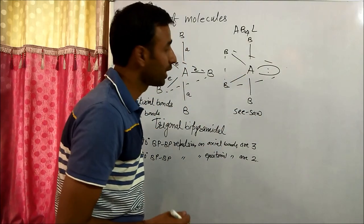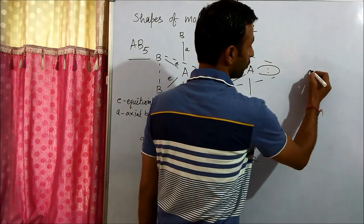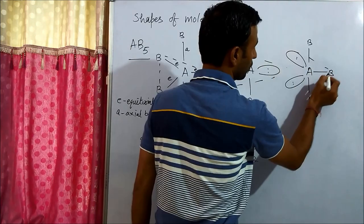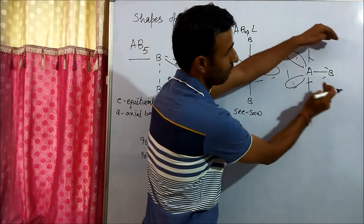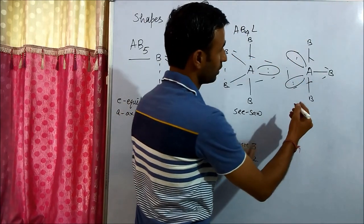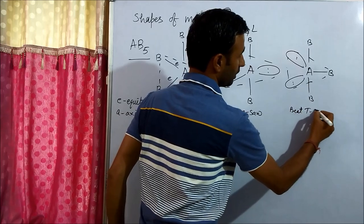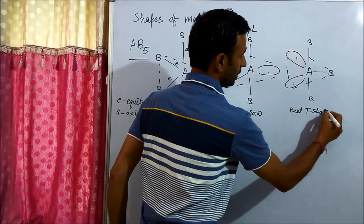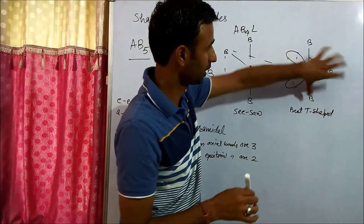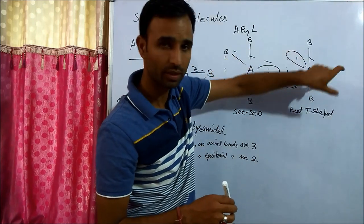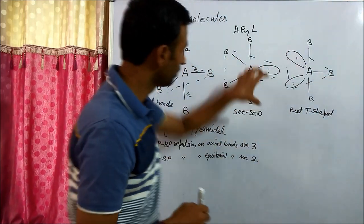If we have two lone pairs, then again both lone pairs are on equatorial positions. Because of these lone pairs, the bond pairs are slightly bent. So this shape is called bent T-shaped. If you rotate it, it looks like a T — and if rotated further, it resembles see-saw.